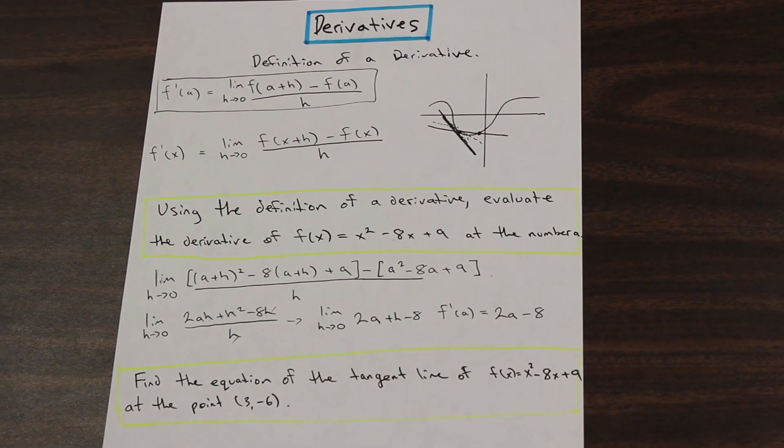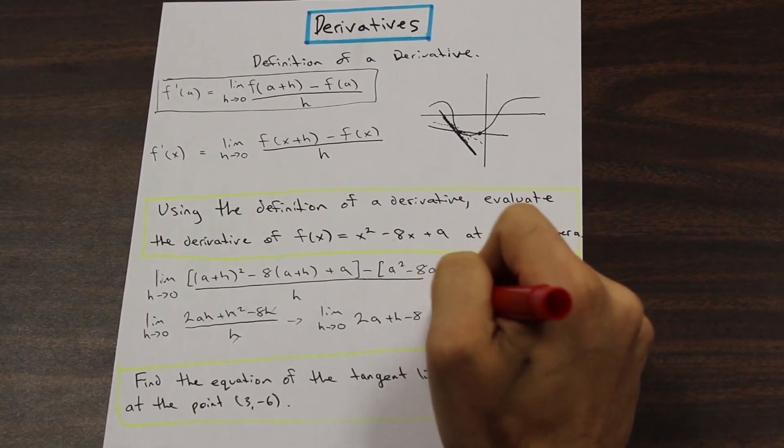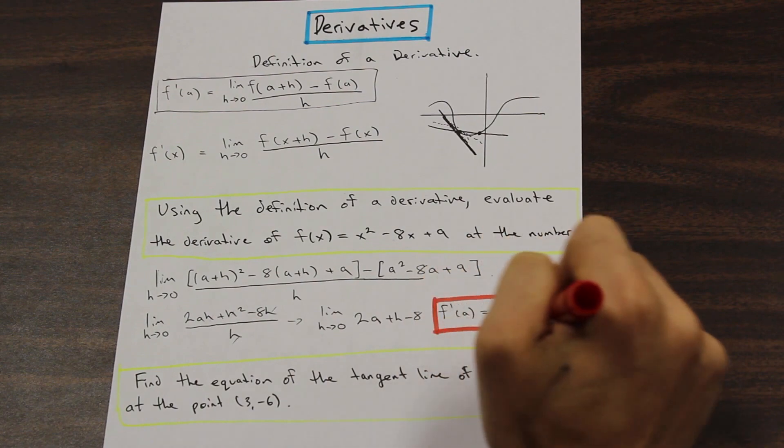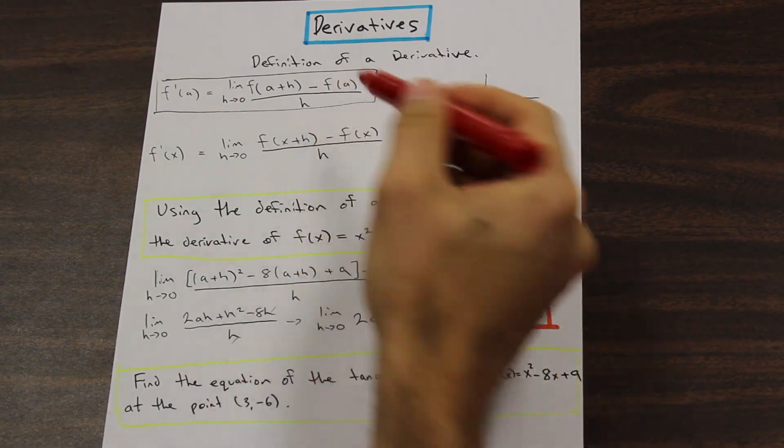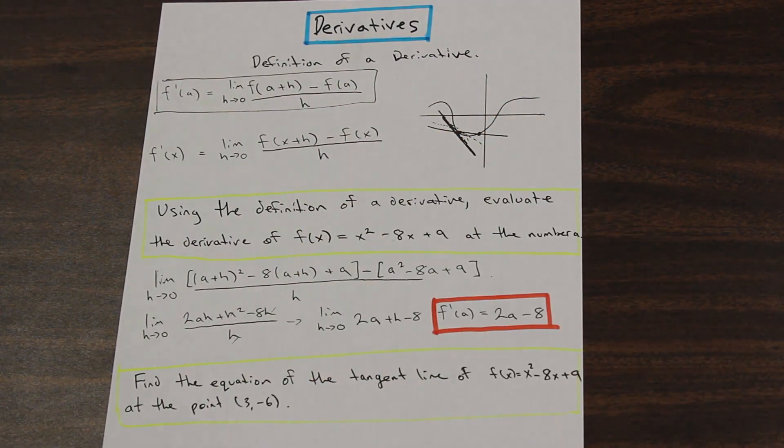And that is going to give us f'(a) = 2a - 8. So what do we have there? We just found the derivative of this function up here. Very perfect.